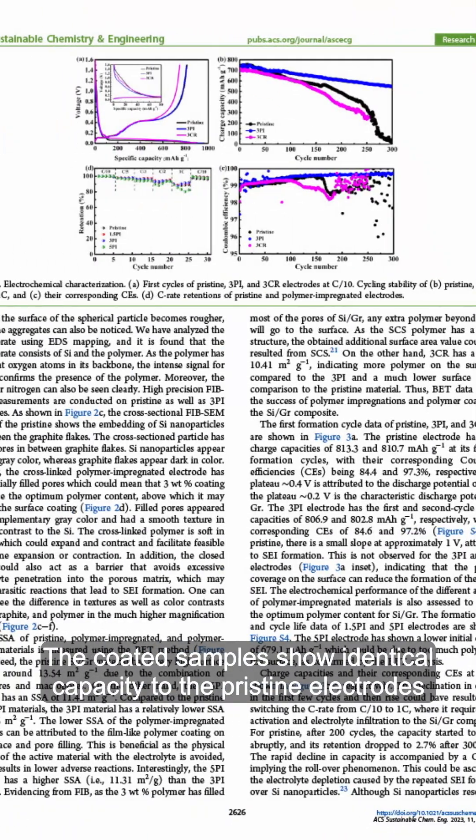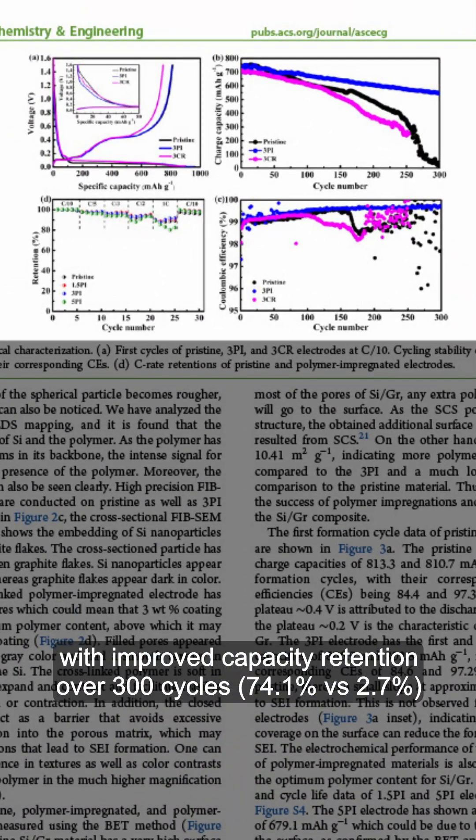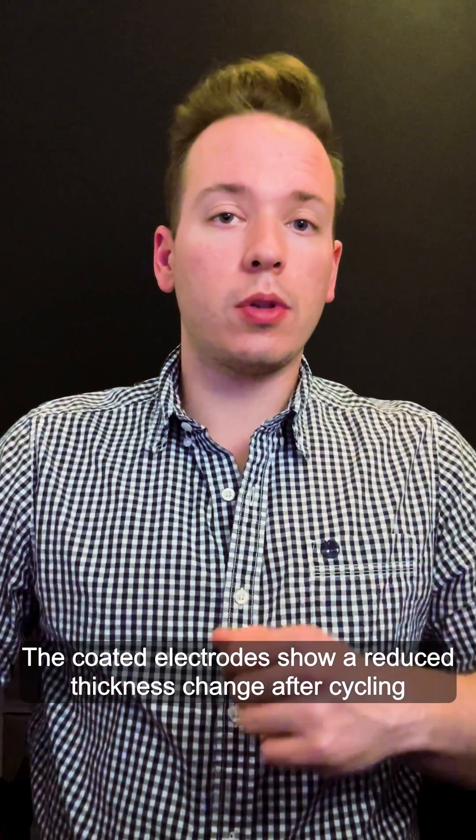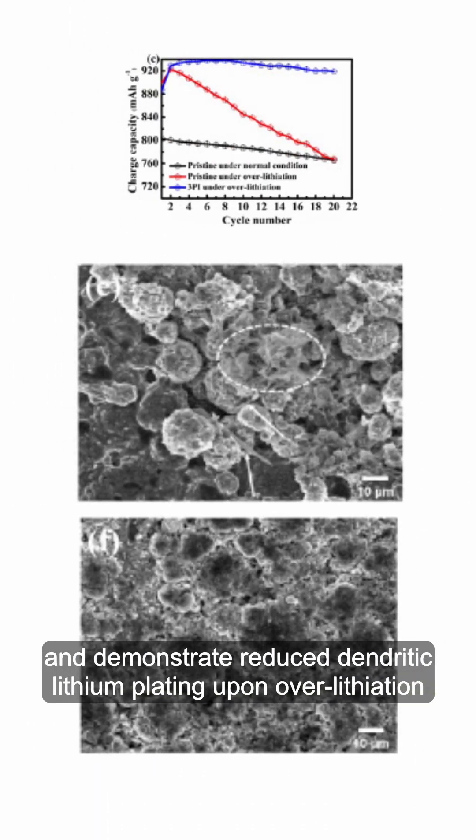Coated samples show identical capacity to the pristine electrodes with improved capacity retention over 300 cycles. The coated electrodes show reduced thickness change after cycling and demonstrate reduced dendritic lithium upon over-lithiation.